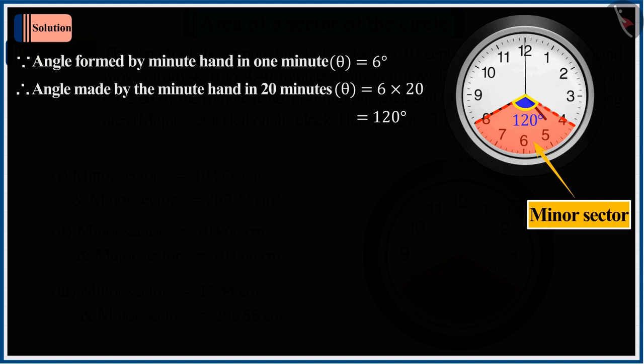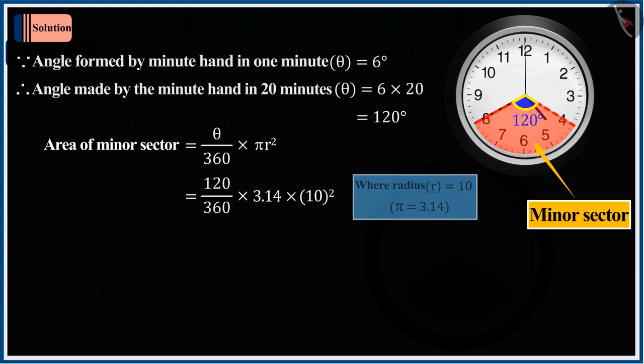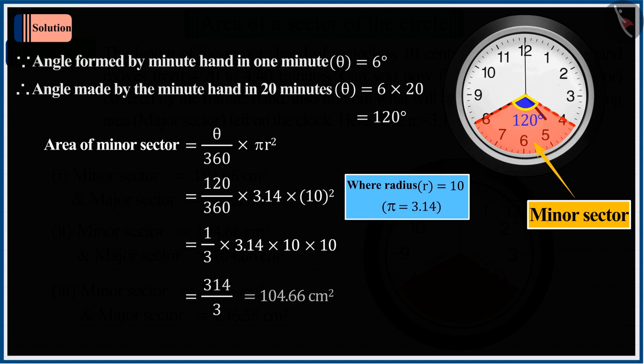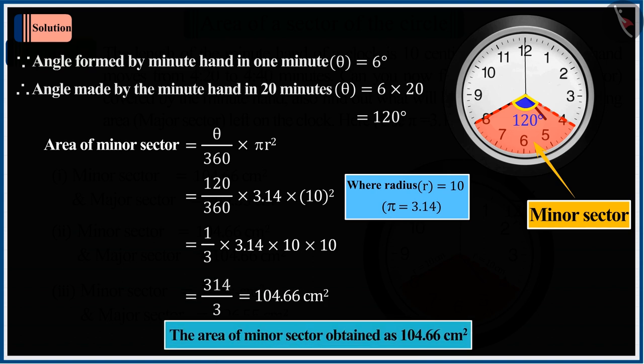By solving for the area of minor sector, putting theta and R in the formula, the area of minor sector obtained as 104.66 square centimeters.